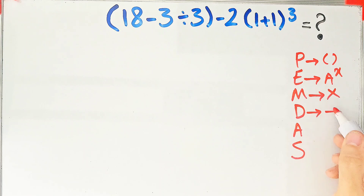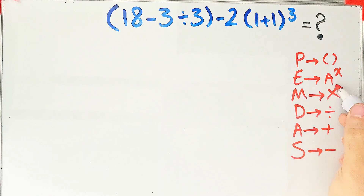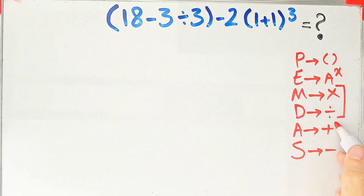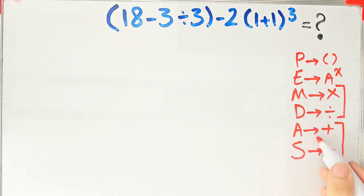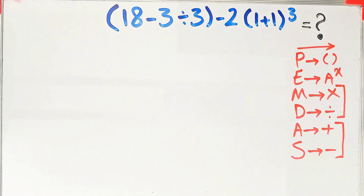D stands for division, A stands for addition, and S stands for subtraction. Multiplication and division have the same level of priority, and addition and subtraction also have the same level. When we have both in an expression, we start from the left and simplify.